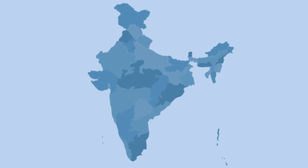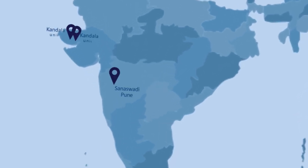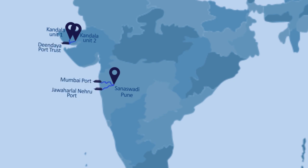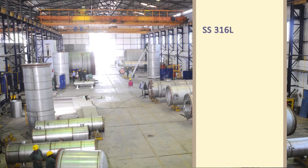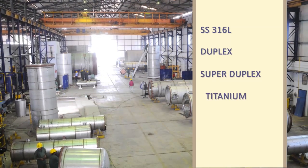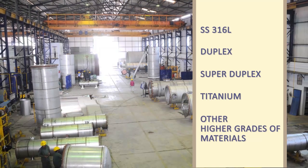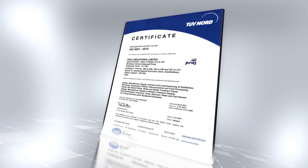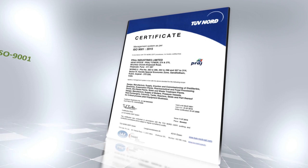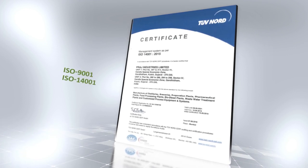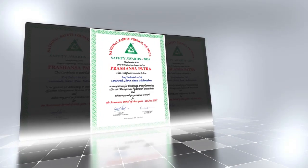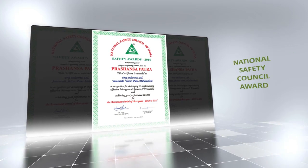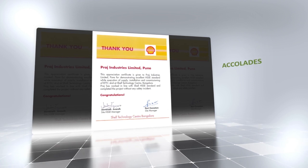To cater to various manufacturing requirements, Praj has three world-class facilities with excellent connectivity to highways and ports. Praj's facilities are capable of handling all critical materials like SS316L, duplex, super duplex, titanium, and other higher grades of materials. All Praj facilities are accredited with ISO 9001, ISO 14001, and OHSAS 18001. Praj's HSE system has received the prestigious National Safety Council award and accolades from numerous customers.